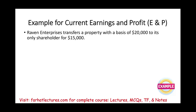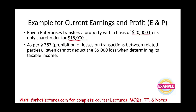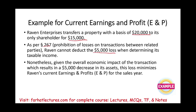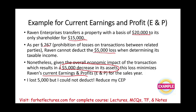Second example: Raven Enterprises transferred property with a basis of $20,000 to its only shareholder for $15,000. Since this is a transaction with a related party under Section 267, the $5,000 loss cannot be deducted when computing taxable income. However, the company did economically lose $5,000 worth of assets. This loss reduces current E&P because it reduced their capacity to pay dividends — so it's a negative adjustment to CEP even though it doesn't appear on the 1120.